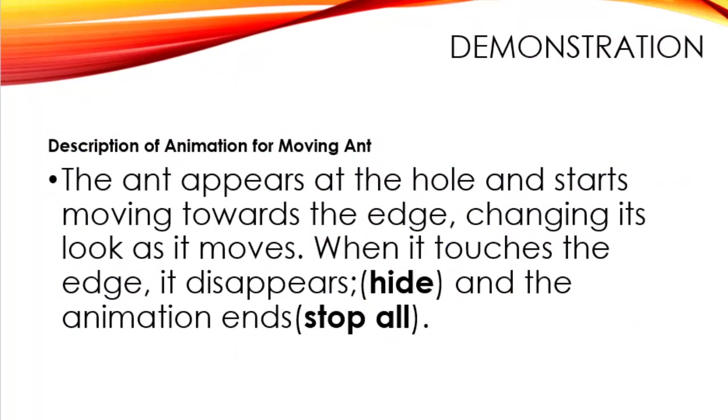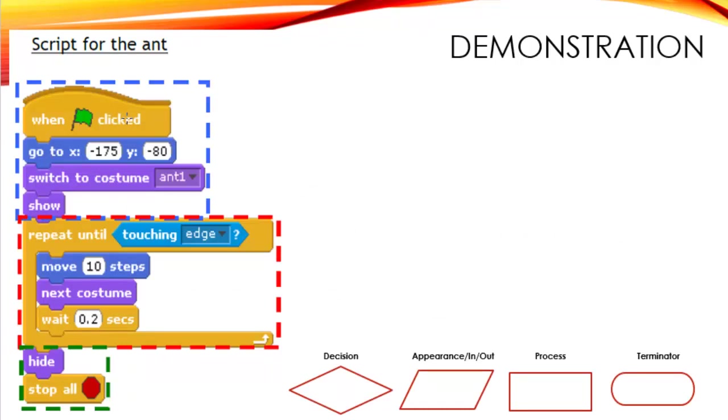I am going to do a demonstration here. This demonstration is for an animation for a moving ant. The ant appears at the hole, and it starts moving towards the edge, changing its looks as it moves. When it touches the edge, it will disappear, and the animation will end. This is the script for the ant. When the green flag is clicked, go to this position, switch to the costume ant 1, and show.